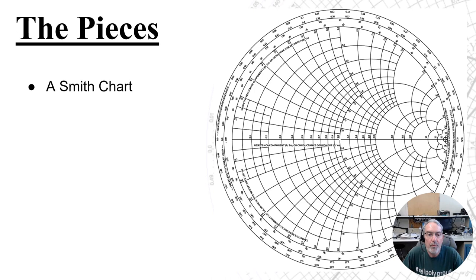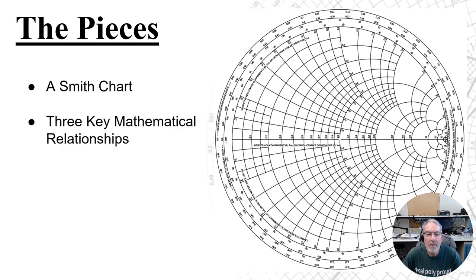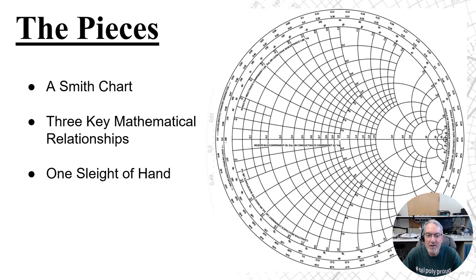Starting with the pieces, we're going to take a quick look at the Smith chart fundamentals — the three key mathematic principles that we need to keep in mind in this process. And then one particular method that might seem like a bit of a sleight of hand, but it's used to help make this whole process work.